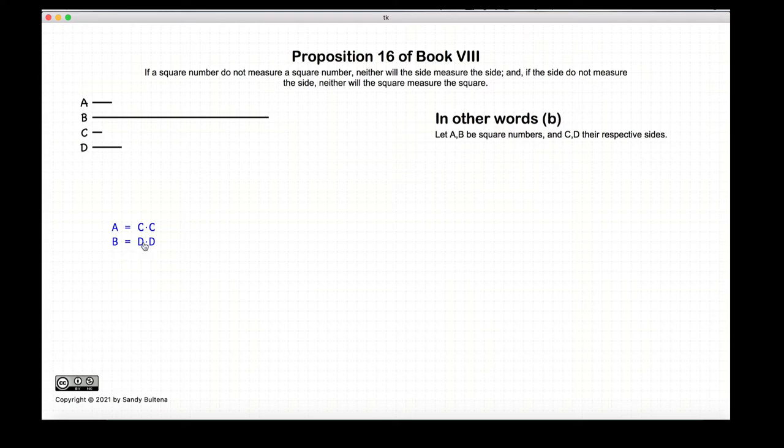The inverse of this, again we have our two square numbers, if C does not measure D, then A does not measure B.